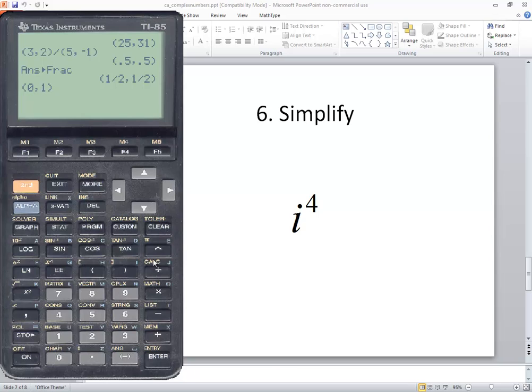Now we want it to the fourth power, so I'll do caret four and then press enter. Now again, this is our real part and our imaginary part, so this says one plus zero i, or just one.